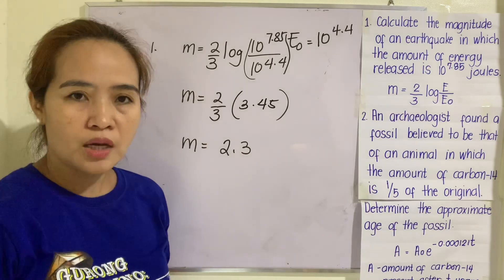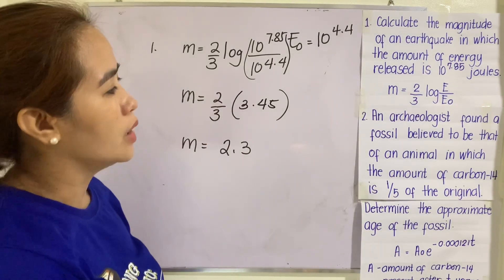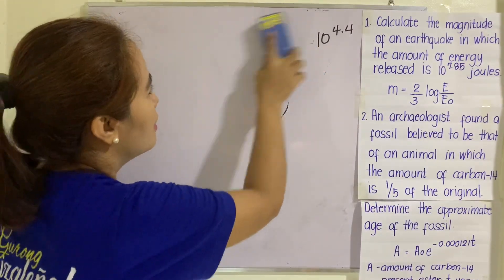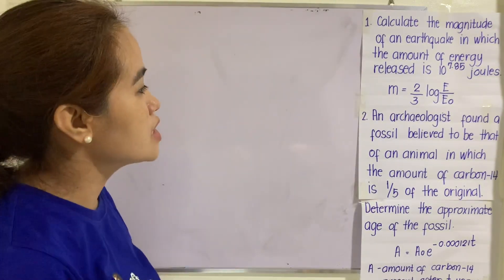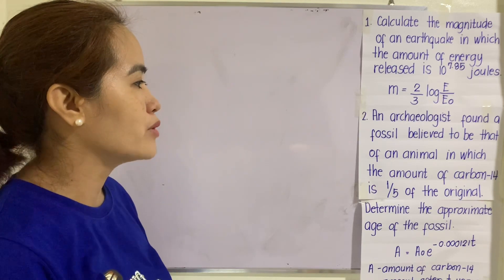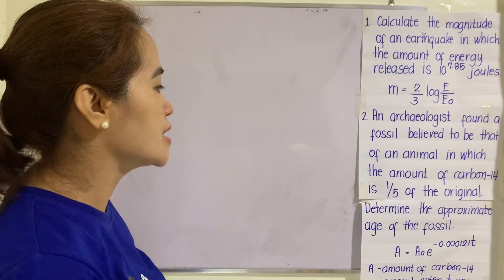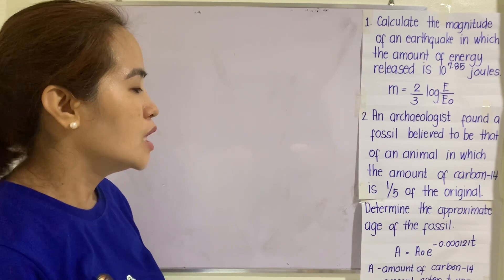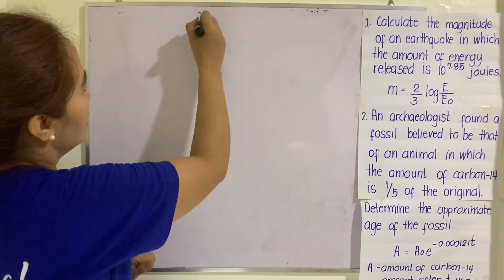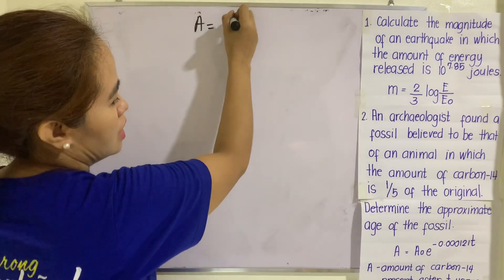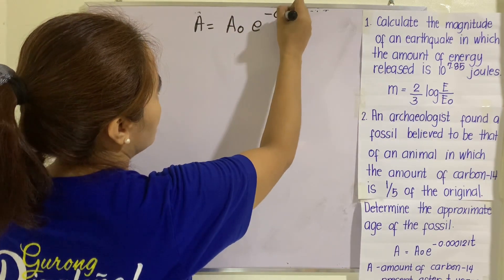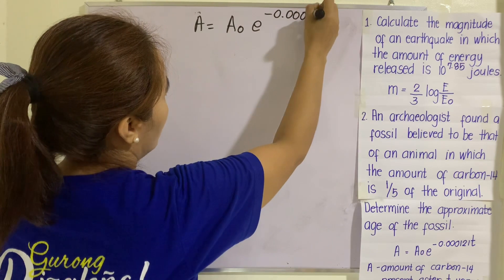That gives us the magnitude. Now let us go to number 2. Another application is finding the age of a fossil. An archaeologist found a fossil believed to be that of an animal in which the amount of carbon-14 is one-fifth of the original. Determine the approximate age of the fossil. The given formula is A equals A sub-zero times E raised to negative 0.000121T.